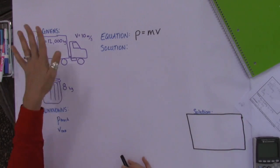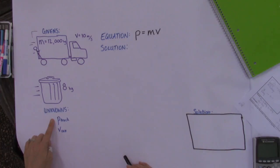So we've written down our givens in our diagram. We wrote down our unknowns which was the momentum of the truck and the velocity of the can, and we have our equation which is momentum equals mass times velocity.